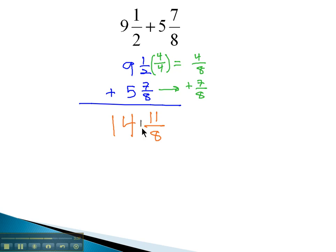However, again, we see the problem that the fraction part is an improper fraction. We will convert that to a mixed number by dividing the 8 into 11. 8 goes into 11 once with a remainder of 3, and so we say that fraction part is 1 and 3 eighths.